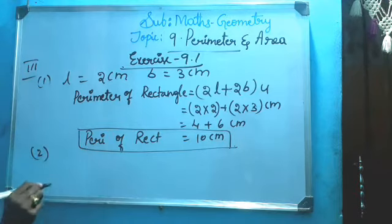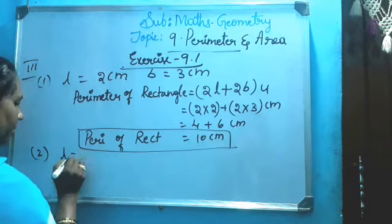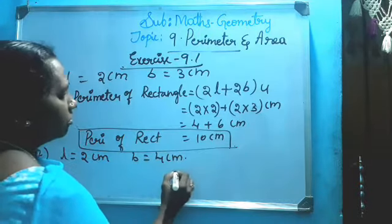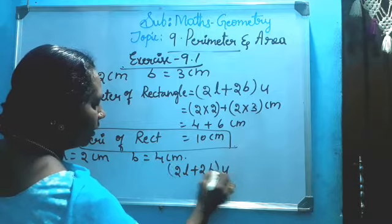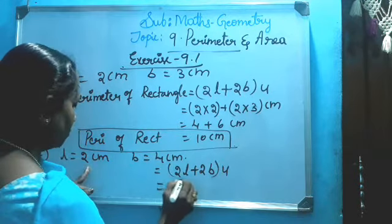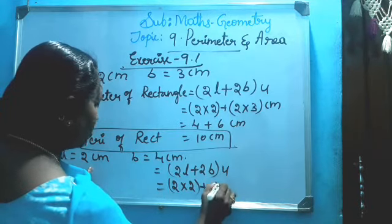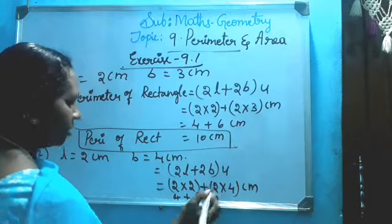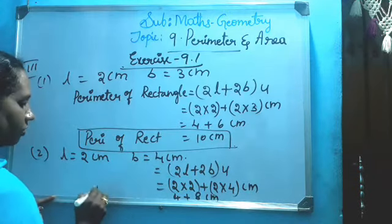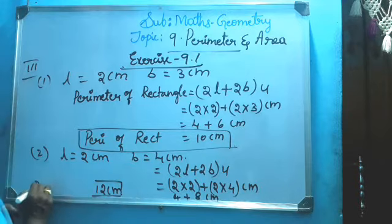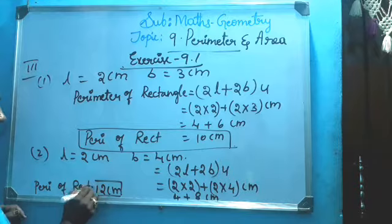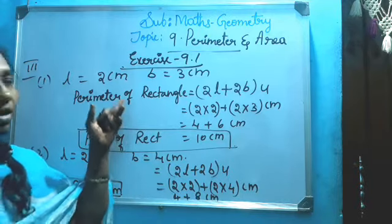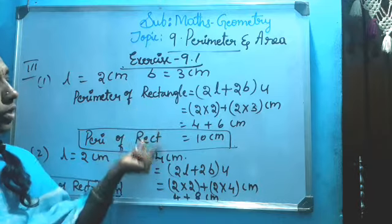Next, second one: what is the measurement? 2 centimeters length and breadth 4 centimeters. Same formula apply: 2 length plus 2 breadth. 2 into 2 plus 2 into 4. Two twos are 4, plus four twos are 8 centimeters. The answer is 12 centimeters, perimeter of rectangle.